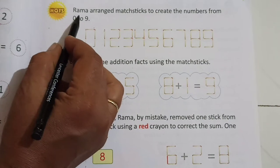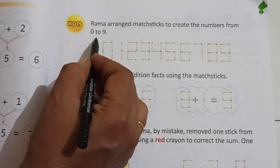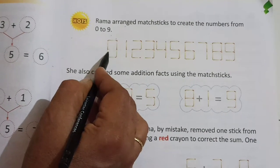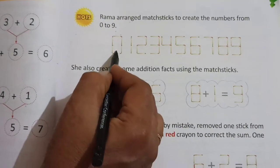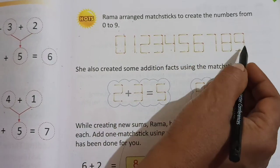Now here Rama arranged matchsticks to create the numbers from 0 to 9. You know children, matchsticks. And with the help of matchsticks, here are numbers from 0, 1, 2, 3, 4, 5, 6, 7, 8, and 9.